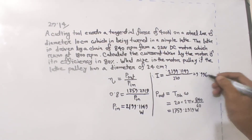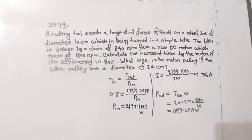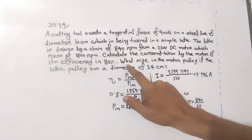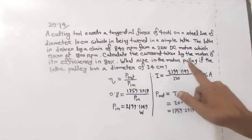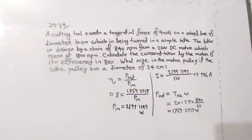So the current calculation gives approximately 10 amperes. Now, what size is the motor pulley if the lathe pulley has a diameter of 24 cm?